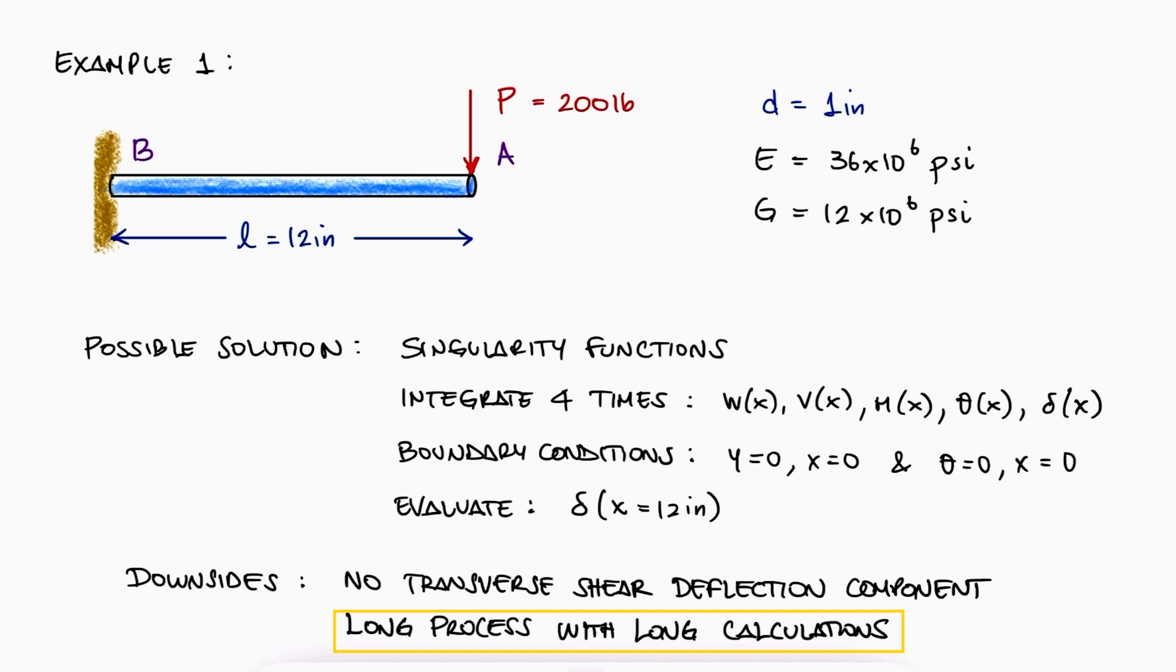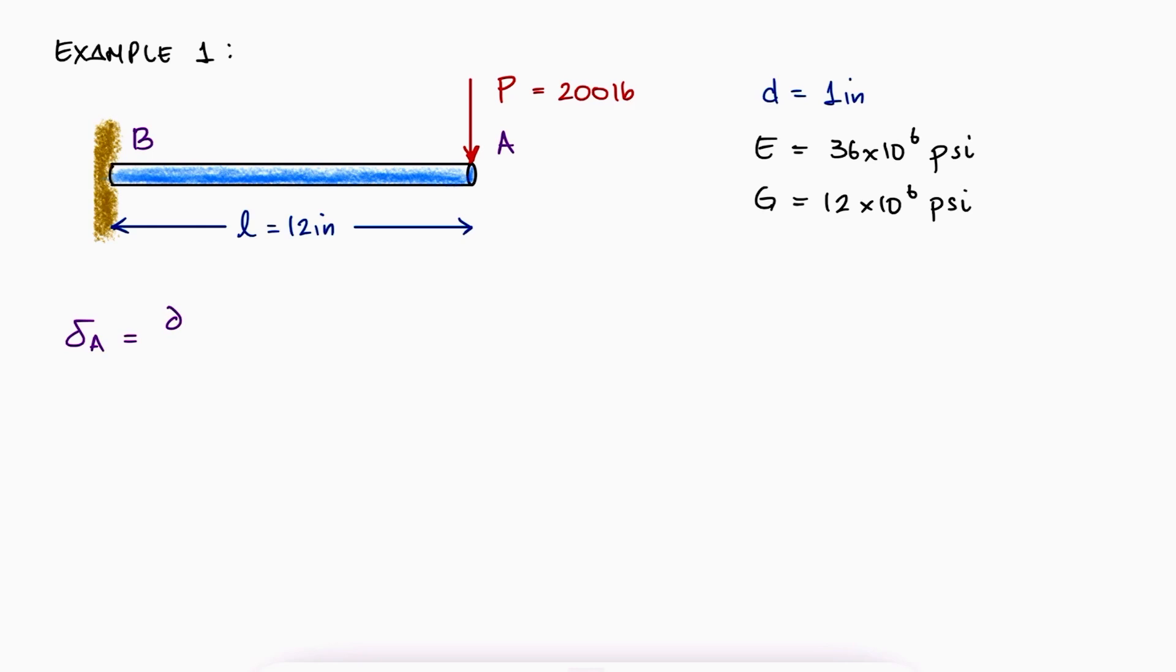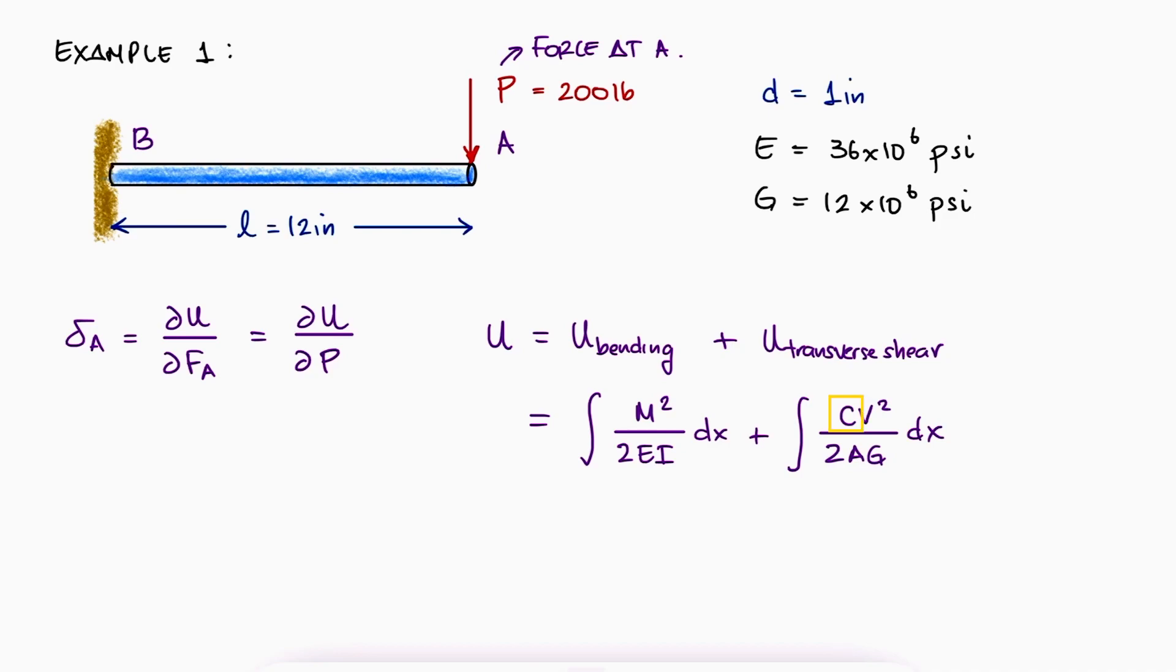And that's the real issue, because for longer structures like this, the transverse shear component doesn't really contribute much to the overall deflection of A. The real problem is that for more complicated structures, the singularity functions or integration methods would either result in much more time-consuming calculations, or would simply just not work. Using Castigliano's theorem, we see that to find the deflection of A, we will have to use the total strain energy, which in this case is caused by the bending and the transverse shear. The C correction coefficient would be 1.11 for a circular beam.